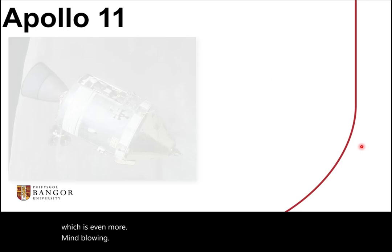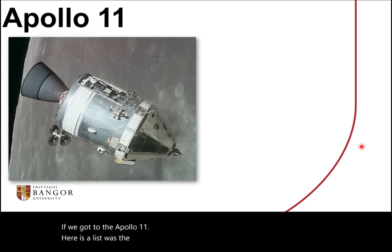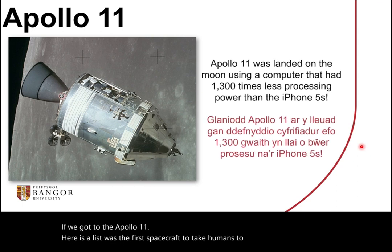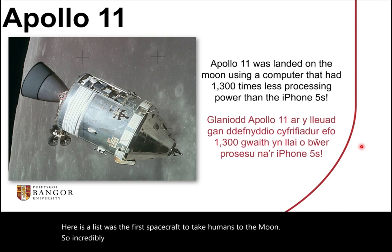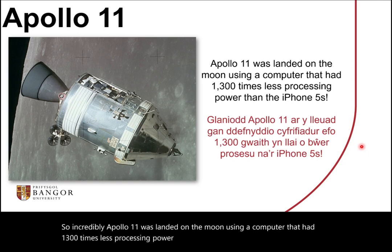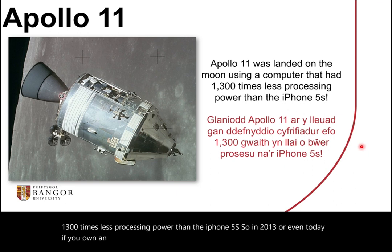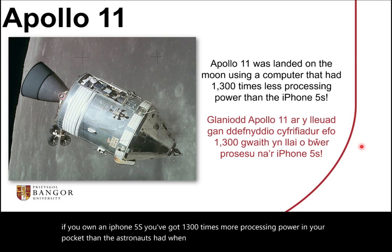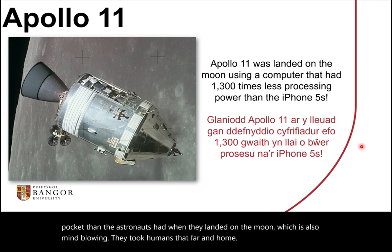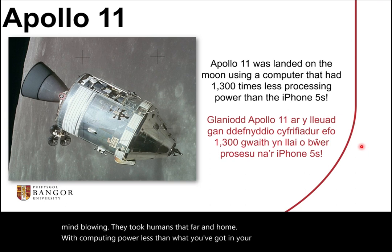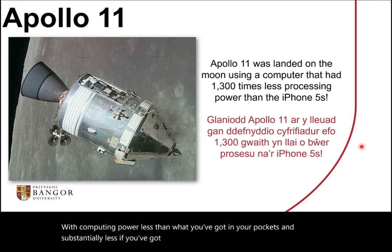Going to the Apollo 11 — the first spacecraft to take humans to the moon — incredibly, Apollo 11 was landed on the moon using a computer that had 1,300 times less processing power than the iPhone 5S. So in 2013, or even today, if you own an iPhone 5S, you've got 1,300 times more processing power in your pocket than the astronauts had when they landed on the moon. They took humans that far and back with substantially less computing power than what you've got in your pocket.